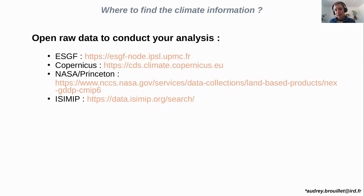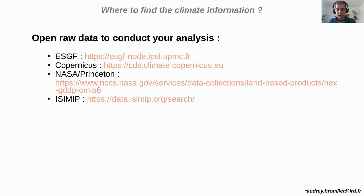Bias correction takes time and a lot of computing resources. So NASA Princeton has corrected some of the most famous climate simulations — specifically CMIP6, the Coupled Model Intercomparison Project sixth phase — which has been used to draw conclusions of the last IPCC report and is currently the most recent multi-climate model exercise. So it's already corrected, which is very important to have access to.